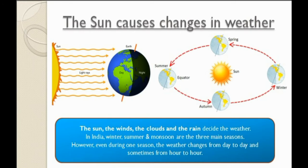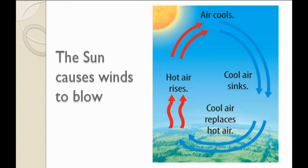The sun, winds, clouds and rain decide the weather. In India we have three main seasons: winter, summer and monsoon. However, even during one season you will notice that the weather changes from day to day and sometimes from hour to hour. Now let's see how the sun causes winds to blow.